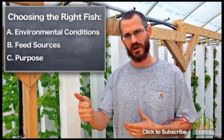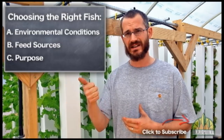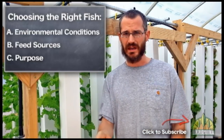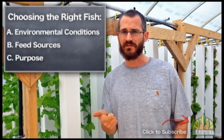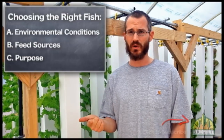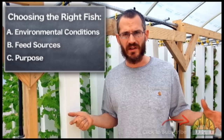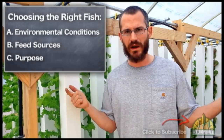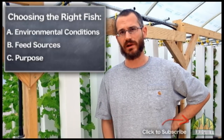So keep those three things in mind. What are my environmental variables going to look like, and does the fish I'm considering match the environment? What kind of feed do I have available — am I going to use commercial feed, or some other on-site feed like vegetable matter or black soldier fly? And what do I want to use the fish for? Those are the three things to keep in mind when considering fish.